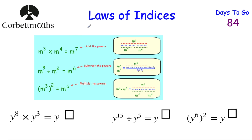Now let's look at the laws of indices. These are useful in algebra when expanding brackets or multiplying algebraic terms, and also in standard form. If you have the same base — for example, m³ × m⁴ — that's m multiplied by itself 3 + 4 = 7 times, so m⁷. The shortcut is: when multiplying with the same base, add the powers. 3 + 4 = 7.